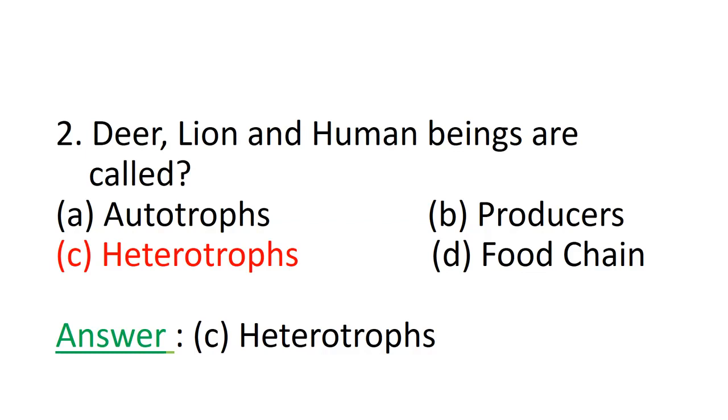Here we know autotrophs or producers are the ones who make their own food. However, looking at the organisms deer, lion, human beings, we can identify that they all depend on others for their food. Hence, they are commonly known as heterotrophs. Option C is the correct answer.